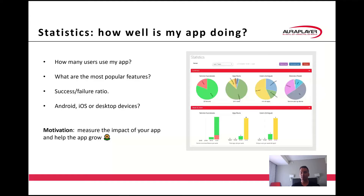Many clients finish developing apps with Aura Player and ask: how do we know how many users are using the app? Which features are the most popular? And what is the success-failure ratio? For mobile or hybrid apps, clients are also interested to know whether users use Android, iOS, or desktop devices. Management often asks for this data when an app goes live, in order to measure the impact of the app, how well it is adopted by users, and in order to help the app grow.